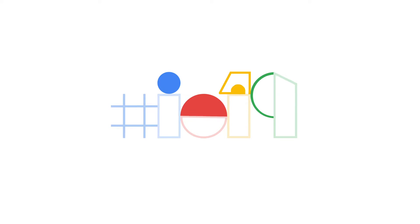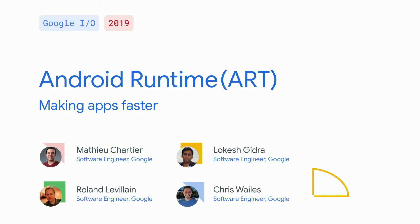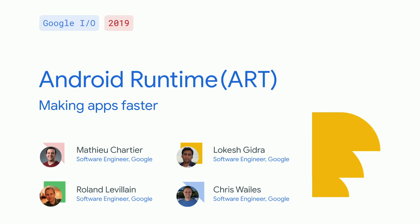Hello, everyone. Thank you all for coming, and let's get started. I'm Matthew, and today my colleagues and I will be talking about how we are making the Android Runtime, also known as ART, faster in Android Q. We will also be showing you both some internal knowledge about ART, as well as some best practices, such as using the ReportFullyDrawn API and when to use object pooling. And now, a recap about how ART works.